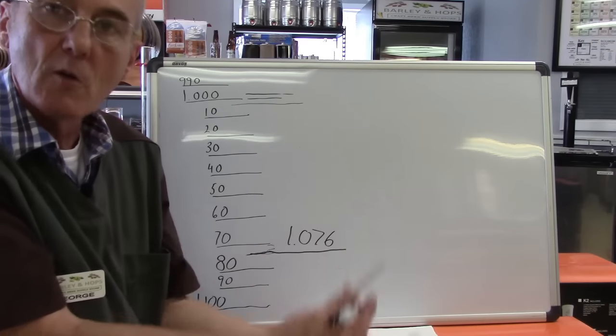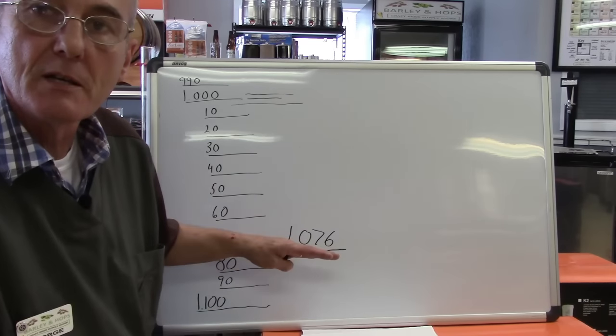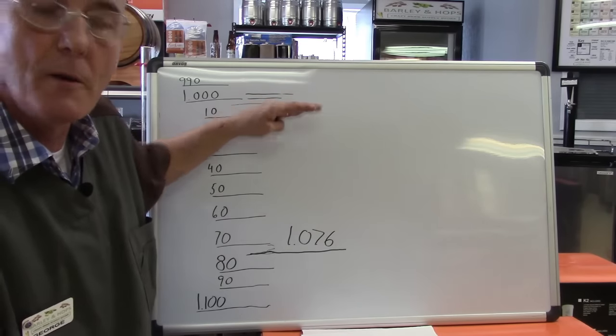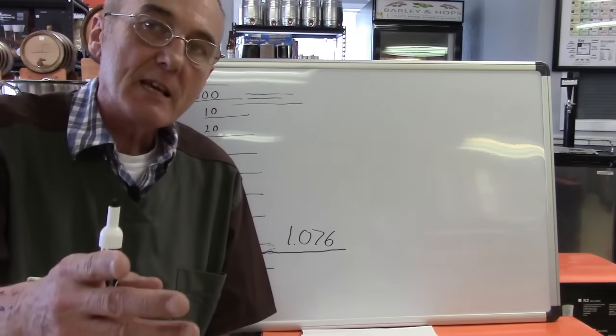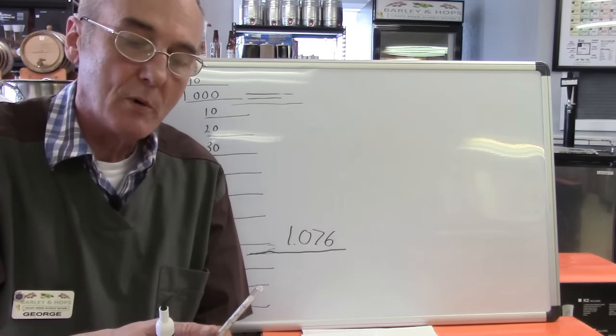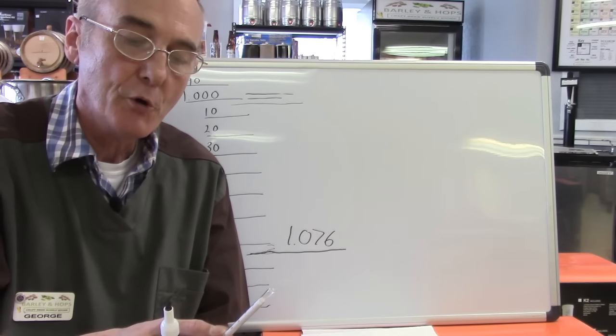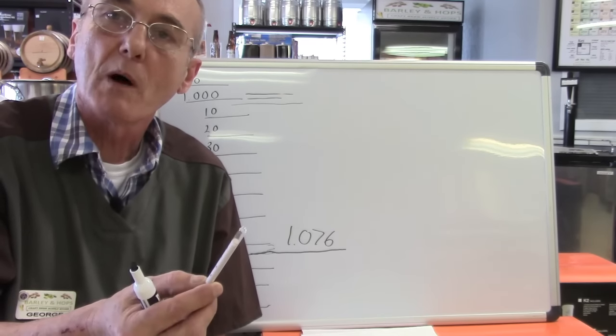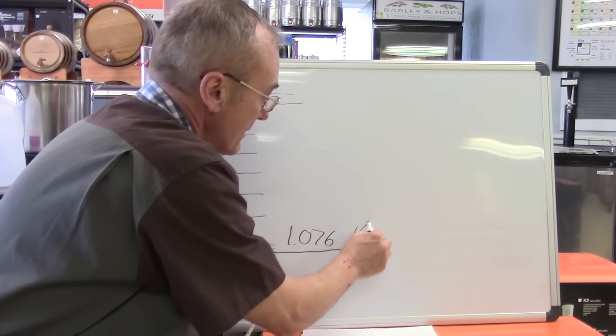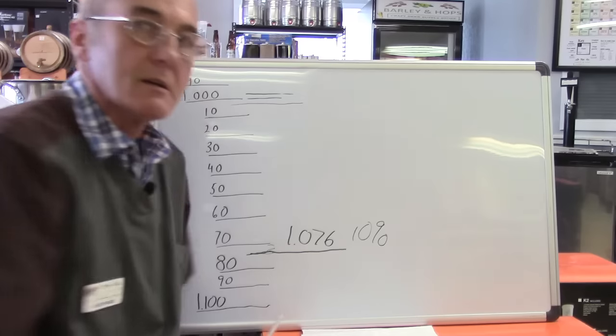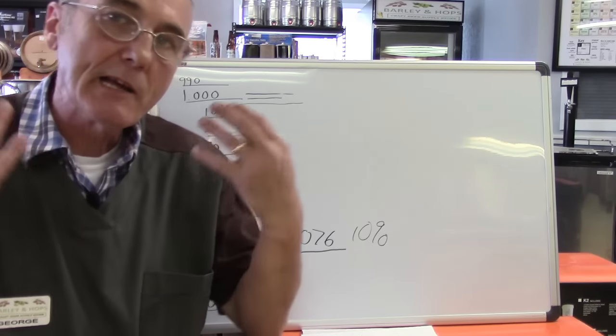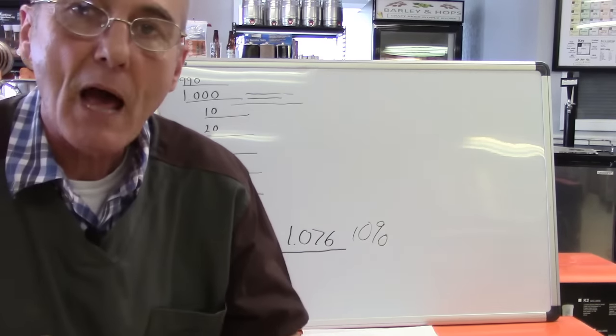All we've got to do now is allow the yeast to eat for this number to start dropping all the way back to one. The interesting thing about your hydrometer is if you roll it over from 1.076, you'll notice that it also corresponds to the line marked 10%. That's 10% potential alcohol. And the reason that's there is just to kind of give you an idea, but we're going to do the math completely.